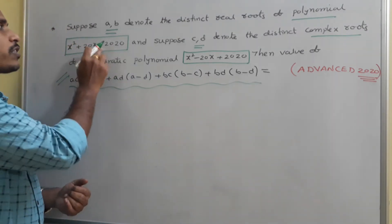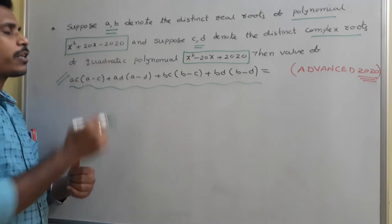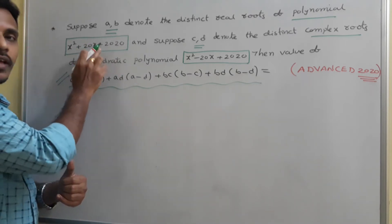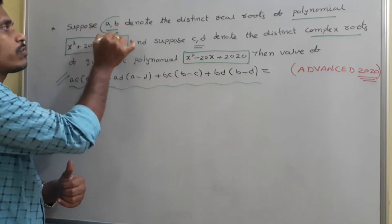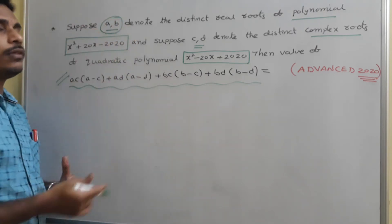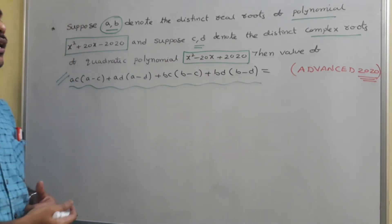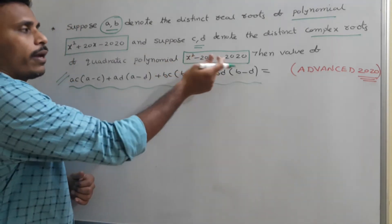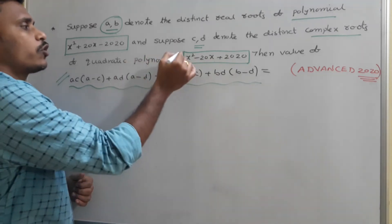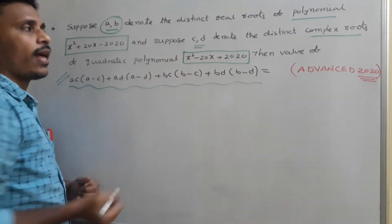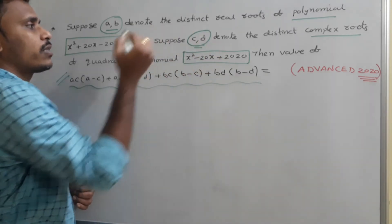Just have a look — the first quadratic polynomial, when you observe its discriminant, for sure it is greater than zero, so it has real roots, and they mention the roots as a and b. Whereas when you observe the discriminant of the second quadratic polynomial, b² − 4ac, for sure it is negative, so this polynomial has complex roots — they name those two as c and d.